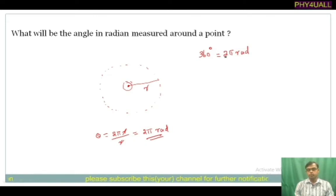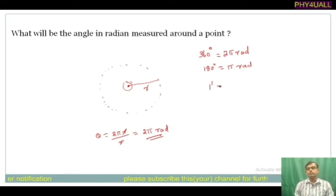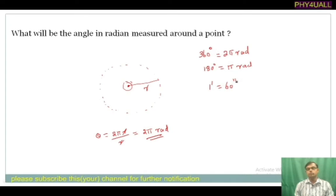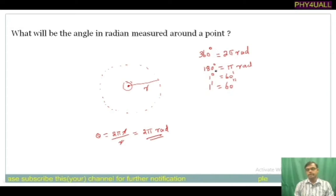Dividing both sides by 2, we get 180 degrees equals π rad. The conversion units are: 1 degree equals 60 minutes (represented with a single dash), and 1 minute equals 60 seconds. So to summarize: 360 degrees equals 2π rad, 180 degrees equals π rad, 1 degree equals 60 minutes, and 1 minute equals 60 seconds. These are the units used for plane angle.